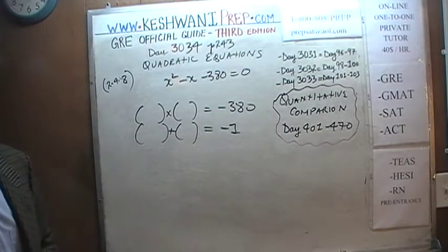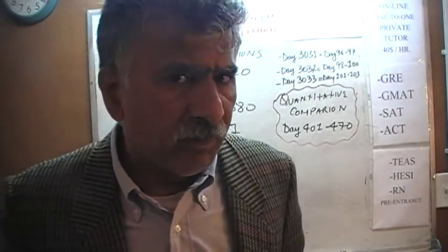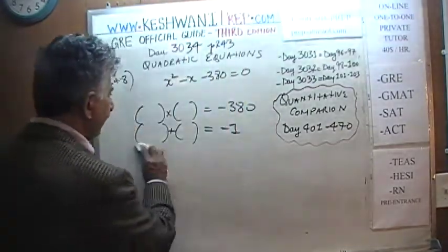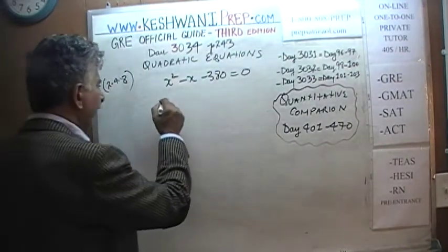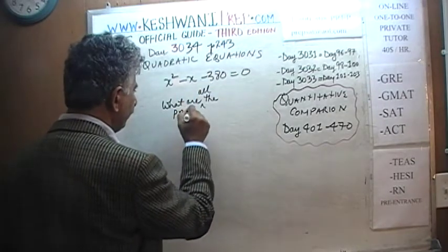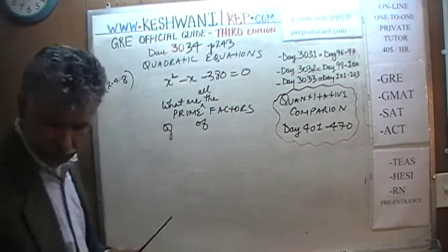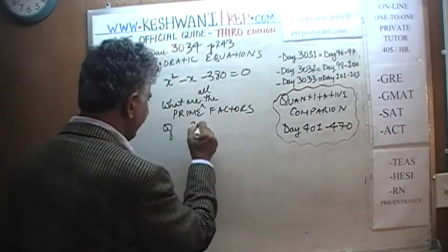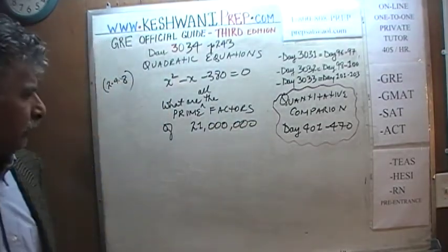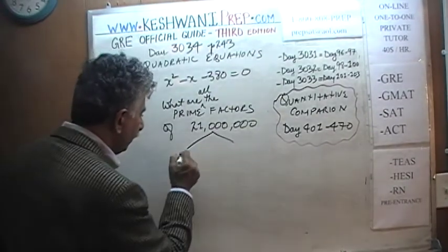Can you think of two such numbers? Here's the trick. I'm going to digress a little bit. For example, if somebody asked us: what are all the prime factors of, say, 21 million? Will you be able to recite all the prime factors of 21 million just like that? There is a trick — it's very simple.